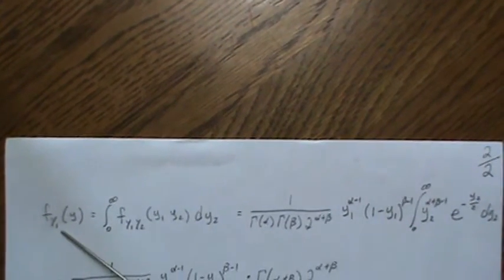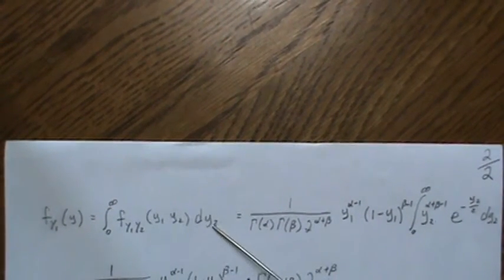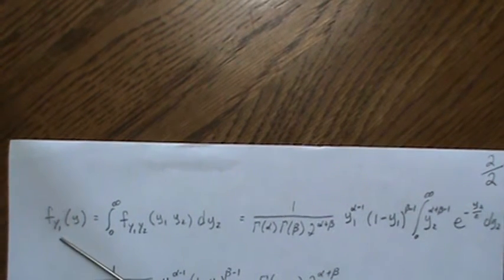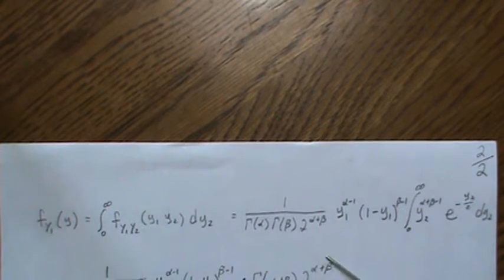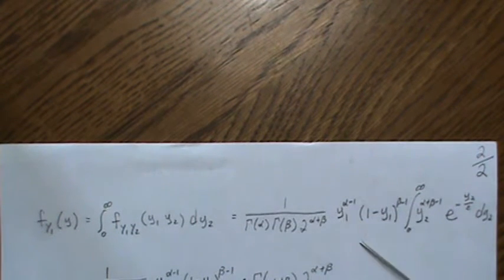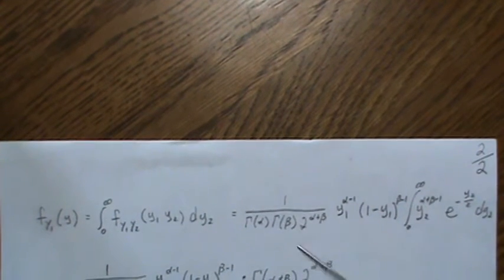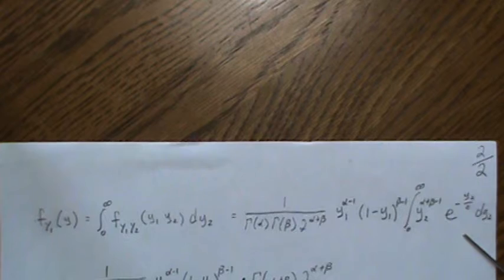Over 0 to infinity to find, that means we're integrating out dY2 and it left with the density Y1. So now we pull out everything that's not a Y2, which is this, and we get this.